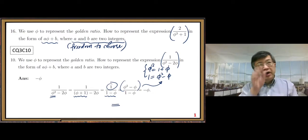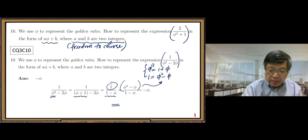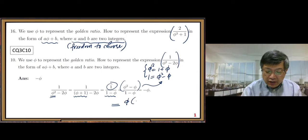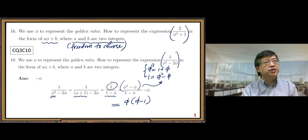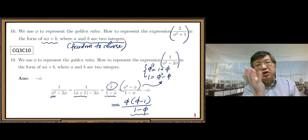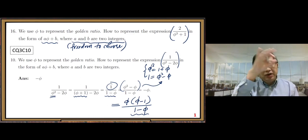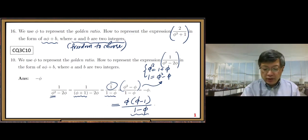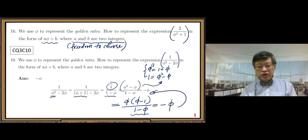After that, so let me do another step, simplification. Because the numerator, there is a common factor, φ. After we take that φ out, φ minus one inside the parenthesis. Then denominator one minus φ, you can see one minus φ, φ minus one, just opposite. After cancellation, negative one. So we have negative φ. That's this number.